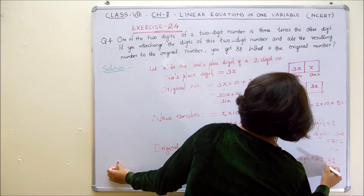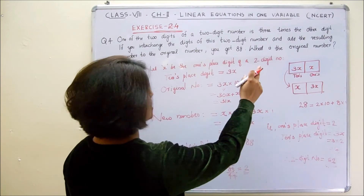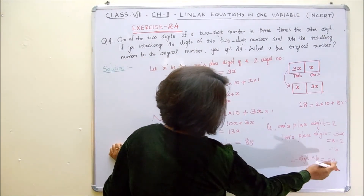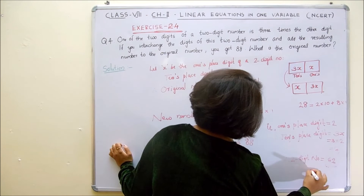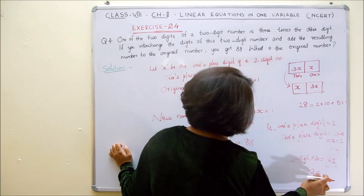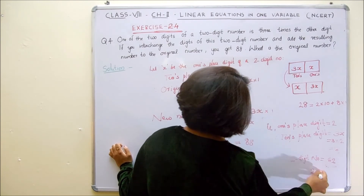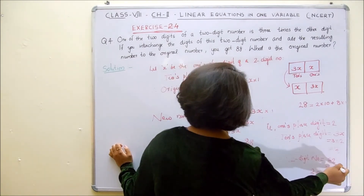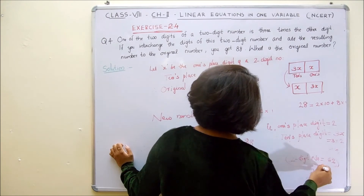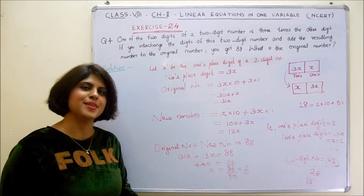62 is the 2-digit number. You can check it: when you interchange the digits it would become 26. So 62 plus 26 is 88. Therefore the two-digit number is 62.